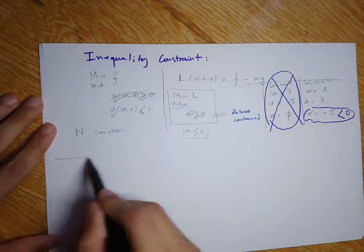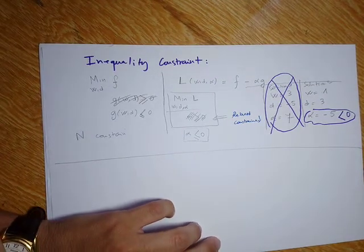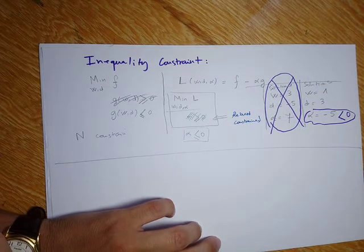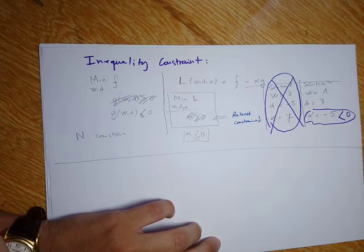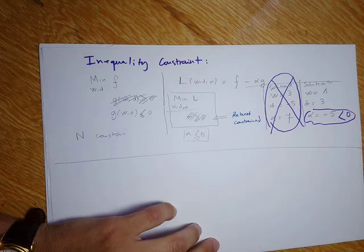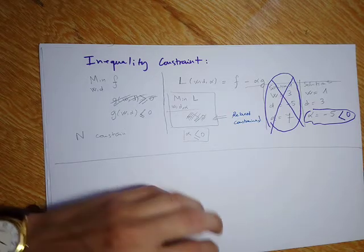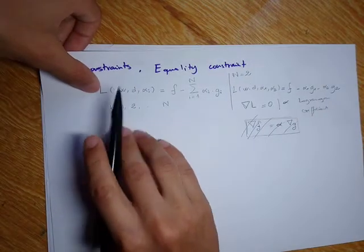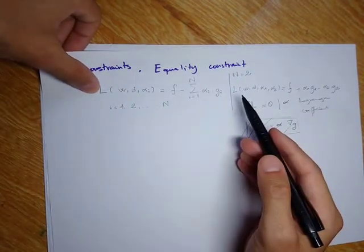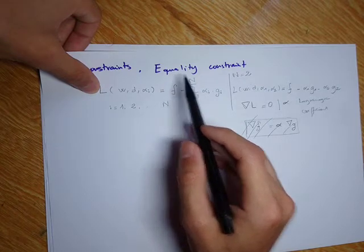Now I will talk about the primal and the dual problem. The primal problem is simply the transformed Lagrangian problem that we have been trying to minimize. This applies for both equality constraints and inequality constraints.